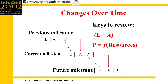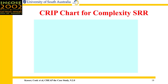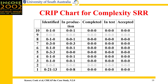The chart is used to compare changes over time, so you need to look at it over a series of milestone reviews. The planned from a previous milestone becomes the estimated for this milestone; the work done becomes the actual. By looking at this, you can take a look at the planned and see if the resources committed to implementing it are reasonable. Here's the CRIP chart for the complexity category at SRR.